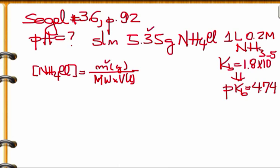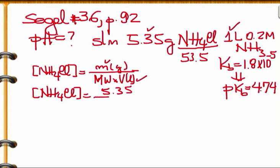The mass was given as 5.35 grams and the volume is 1 liter. For ammonium chloride molecular weight, nitrogen is 14 and chloride is 35.5, giving a total of 53.5. So the concentration of ammonium chloride is 5.35 divided by 53.5 times 1, which gives 0.1 molar.